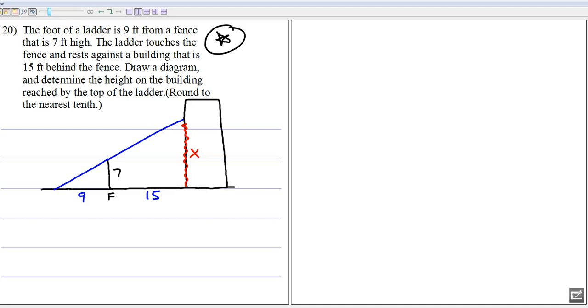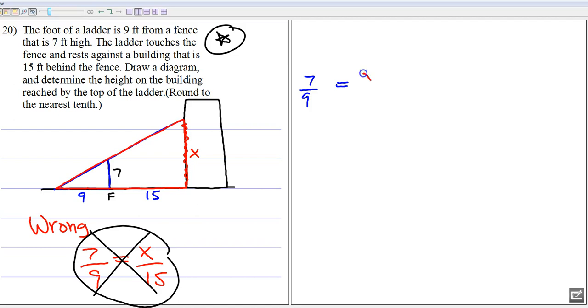So what you don't want to do don't do this. This is wrong. Do not do 7 over 9 equals X over 15. If it's multiple choice I will put that answer on there because I know people are going to do it and you'll get all happy when you see your answer but it's wrong. So be careful. You need to kind of break this up into two separate pieces. So you have this little baby triangle that has a 7 over 9 ratio but then when you look at the big dog the big dog has an X for a side length but the bottom is now these two added together which is what 24? So that right there that's where people screw up so make sure you got that number in there correct.